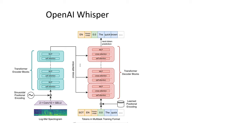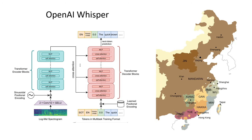Hi everyone. In this video, I'll show you how I fine-tune OpenAI's Whisper model on my family's dialect of Chinese. Whisper is a fairly popular model nowadays for ASR or speech recognition, and it is multilingual, so it can recognize around 100 different languages.